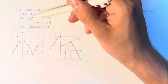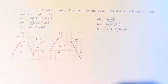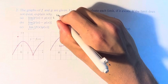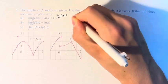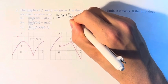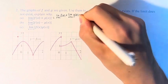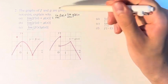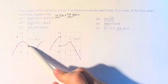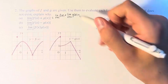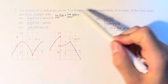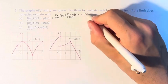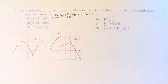So first we have the limit as x approaches 2 of f(x) plus g(x). This is equal to the limit of f(x) plus the limit of g(x). We can separate these out and evaluate them by looking at the graphs. As x approaches 2, f(x) approaches this point right here at negative 1. As x approaches 2, g(x) approaches this point right here, which has a value of 2. So this is negative 1 plus 2, or positive 1.